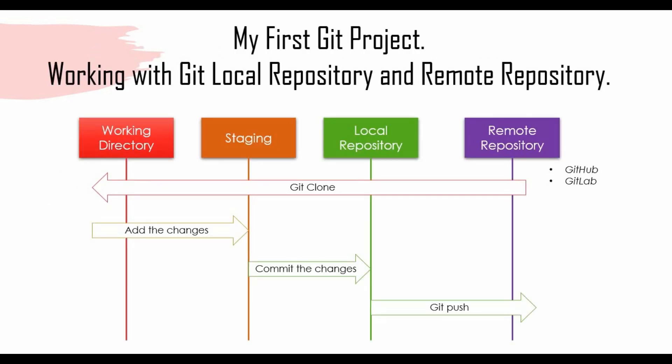This would be my first git project which I'm doing as part of this tutorial, and we'll be working on local repository and remote repository very frequently after this tutorial, so this would be the very base for it. We discussed about how the workflow will happen in git — there will be different things with terminologies like working directory, staging, local repository, and remote repository.